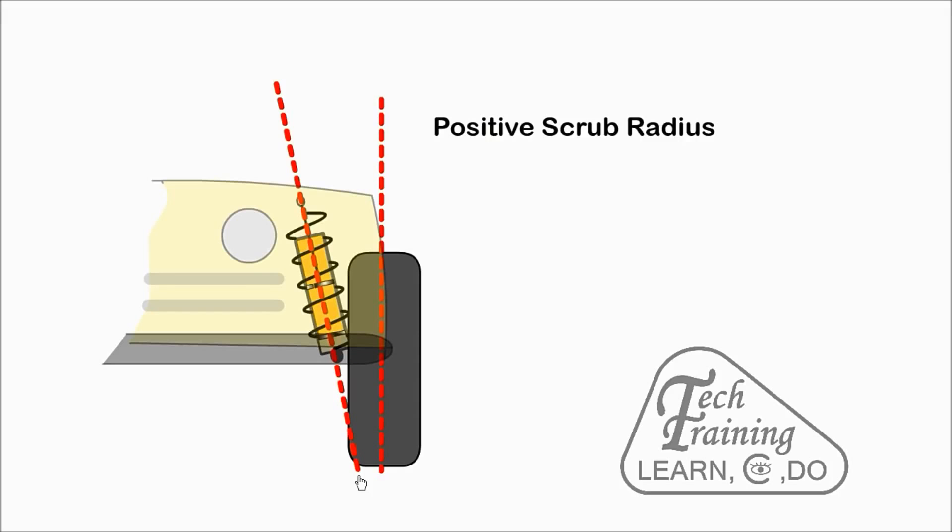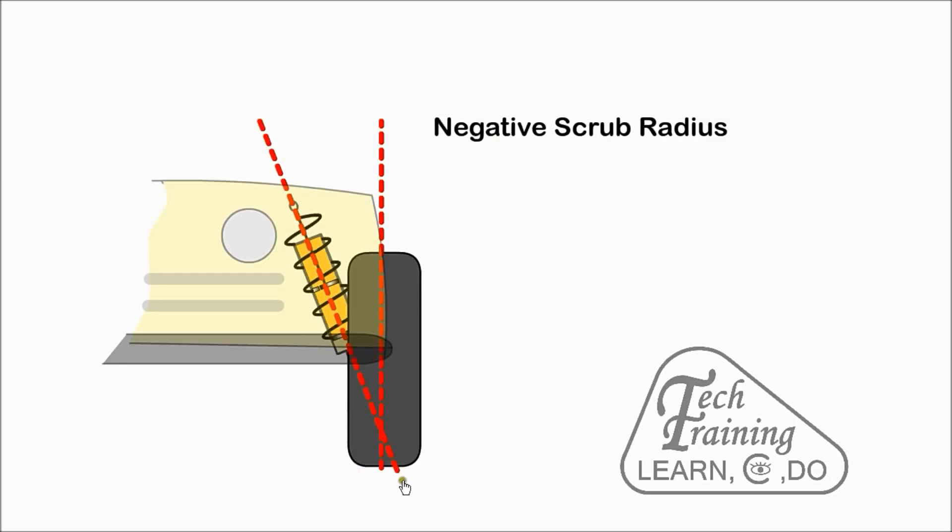Braking force on this wheel will tend to turn it outwards. When the steering axis point is towards the outside of the wheel, it is called negative scrub radius. Braking force on this wheel will tend to turn it in.